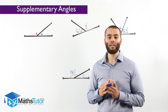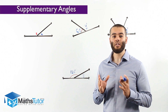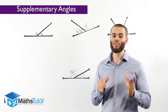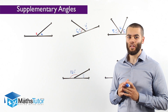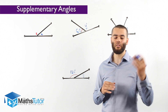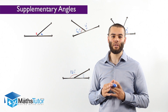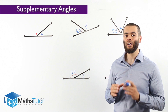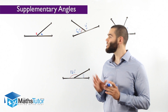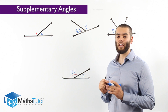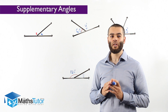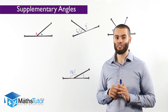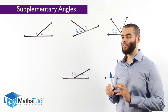Today we're going to be looking at supplementary angles, or what we can call adjacent supplementary angles. They are also related to the adjacent angles and the complementary angles that we've covered earlier on. We're going to notice that they add up to 180 degrees. Let's look at how they work.